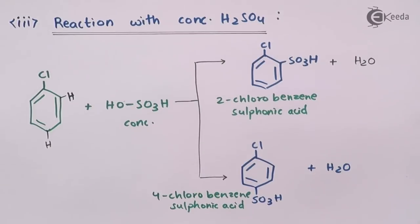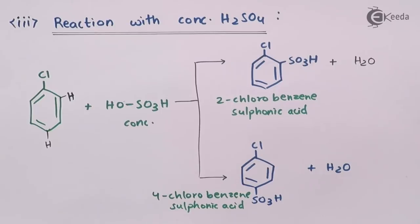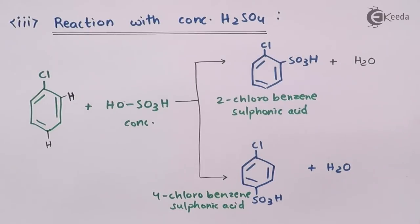Again, 4-chlorobenzenesulfonic acid is basically the major product because it is more symmetrical and more stable compared to the ortho product, 2-chlorobenzenesulfonic acid. That is the sulfonation reaction.